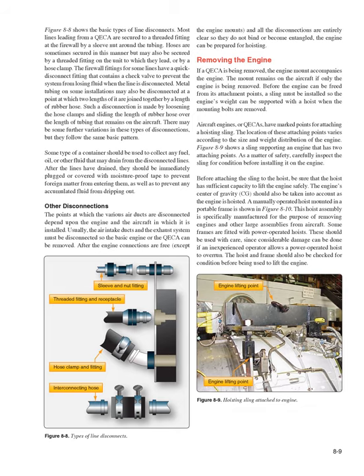Other disconnections: the points at which air ducts are disconnected depend upon the engine and aircraft. Usually, the air intake ducts and the exhaust system must be disconnected so the basic engine or the KECA can be removed. After the engine connections are free except the engine mounts, and all disconnections are entirely clear so they do not bind or become entangled, the engine can be prepared for hoisting. If a KECA is being removed, the engine mount accompanies the engine; the mount remains on the aircraft if only the engine is being removed. Before the engine can be freed from its attachment points, a sling must be installed so the engine's weight can be supported with a hoist when the mounting bolts are removed. Aircraft engines have marked points for attaching a hoisting sling.